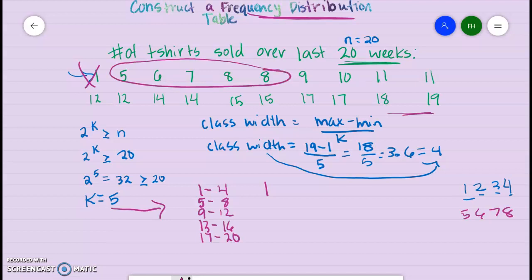How many values are between 5 to 8? We have 1, 2, 3, 4, 5. And then 9 to 12 looks like we have 1, 2, 3, 4, 5, 6.